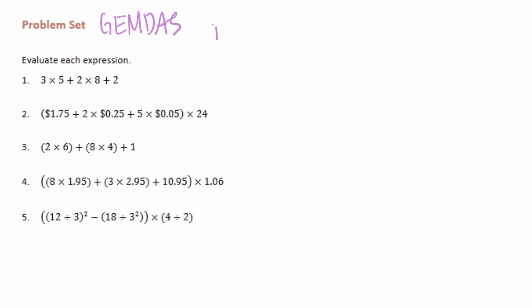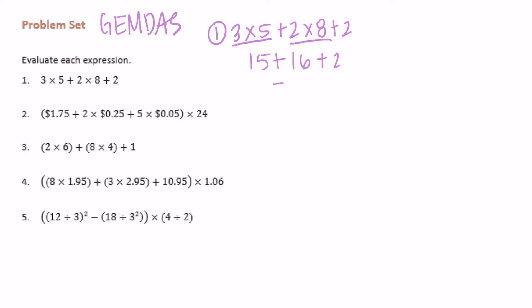Let's start with number one: three times five plus two times eight plus two. There's no grouping and no exponents, so we move to multiplication or division left to right. Three times five is fifteen, and two times eight is sixteen. So fifteen plus sixteen is thirty-one, plus two is thirty-three.